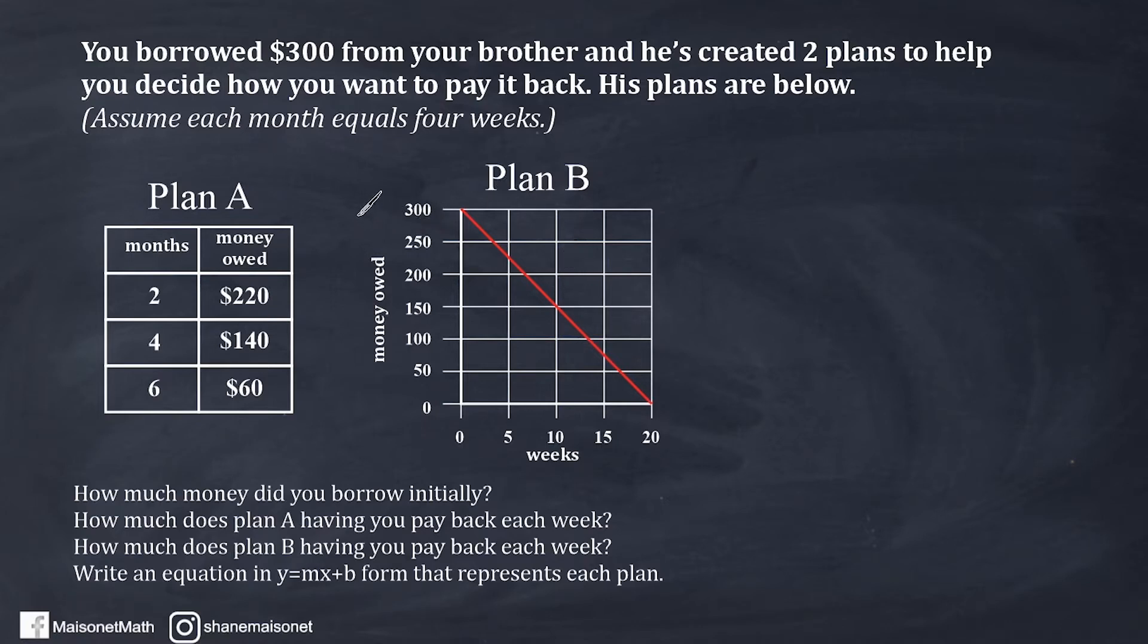So we have to examine Plan A versus Plan B. Now, one thing that we should notice right away is that with Plan A, the table is given in months, but for Plan B, the graph is given in weeks. So that's a little bit of a problem, so we have to be careful here.